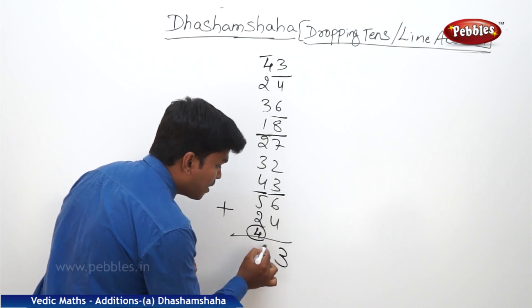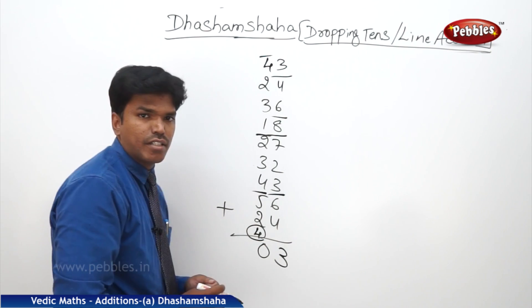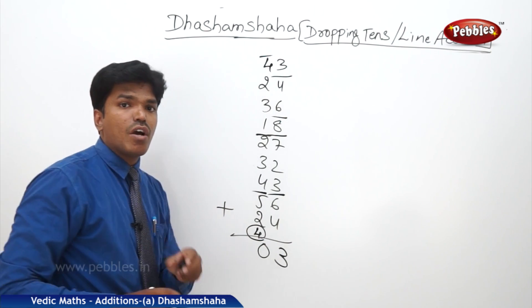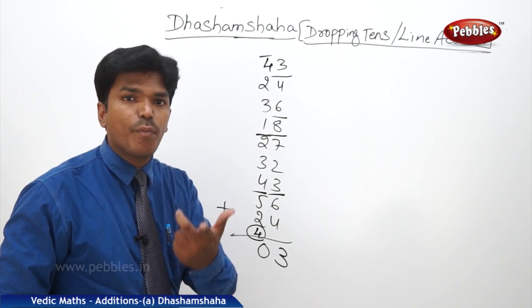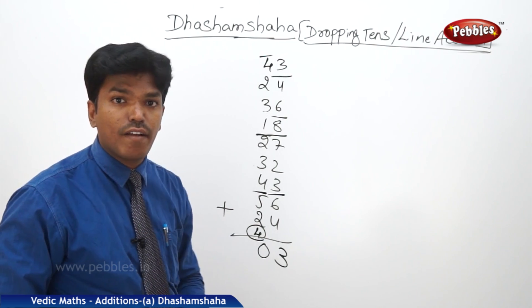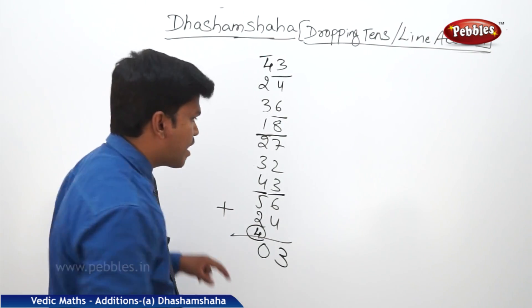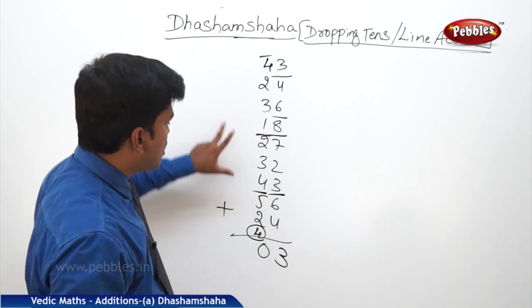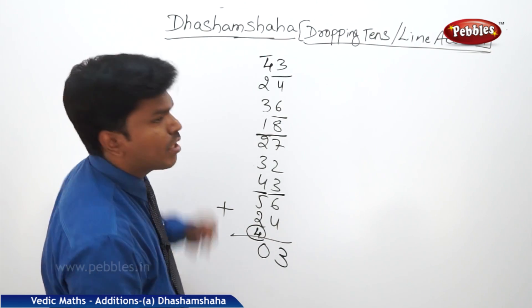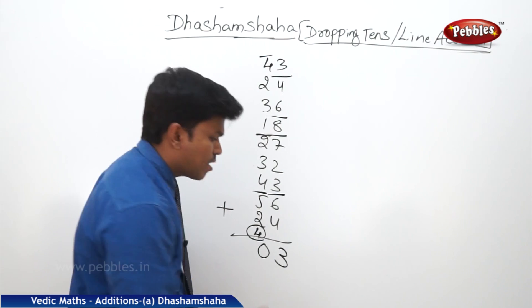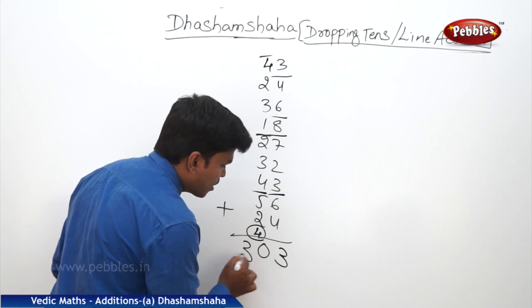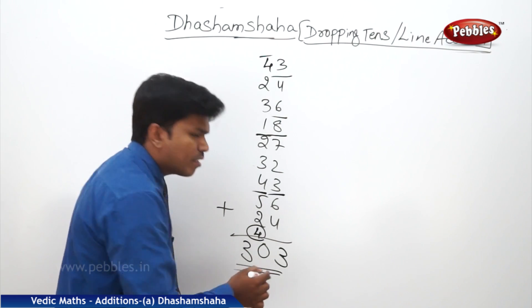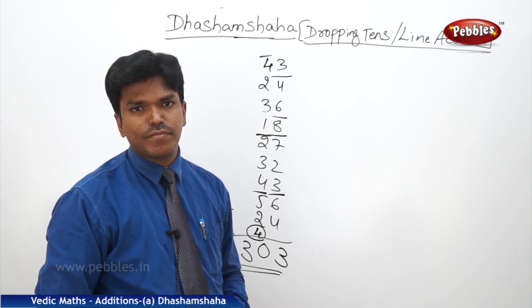Drop that 0 here. Now count how many tens there are — fastly, at a time 2 or 3. Only 3 tens. So write 3 here. What is our answer? 303.